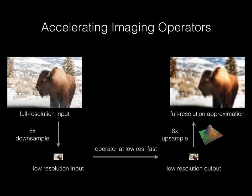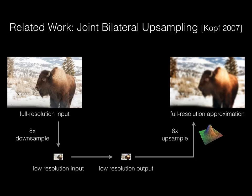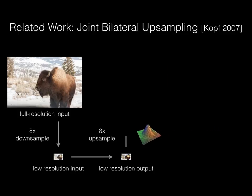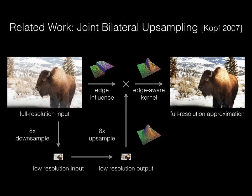The purpose of our method, and a number of related techniques, is to reintroduce information that was lost by reusing parts of the full resolution input. One simple and popular method is joint bilateral upsampling proposed by Kopp and colleagues. They replaced the linear Gaussian upsampling kernel with a non-linear edge-aware bilateral kernel that penalizes weights across edges of the input.